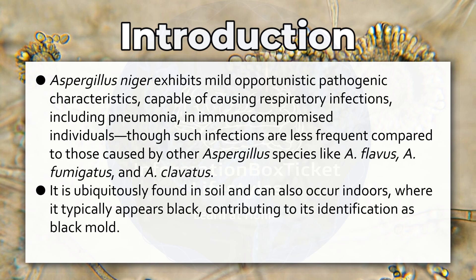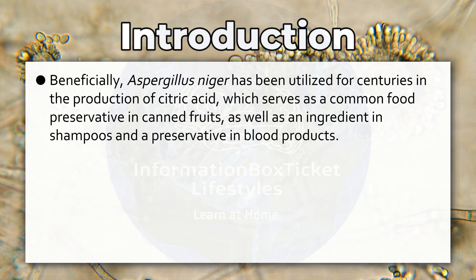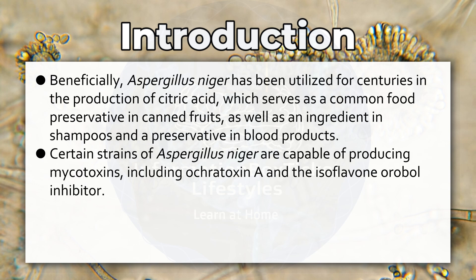It is ubiquitously found in soil and can also occur indoors, where it typically appears black, contributing to its identification as black mold. Beneficially, Aspergillus niger has been utilized for centuries in the production of citric acid, which serves as a common food preservative in canned fruits, as well as an ingredient in shampoos and a preservative in blood products. Certain strains are capable of producing mycotoxins, including ochratoxin A and the isoflavone aurebol inhibitor.